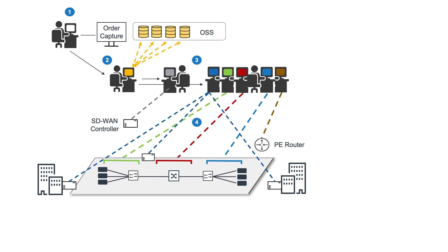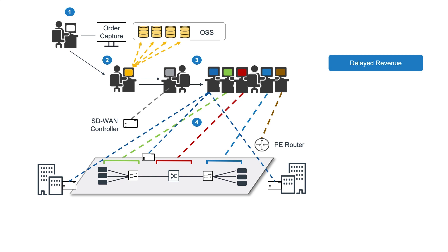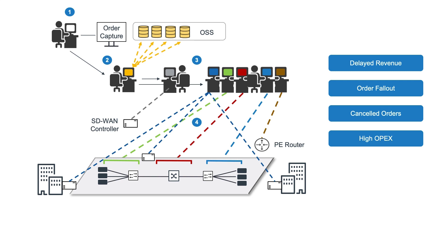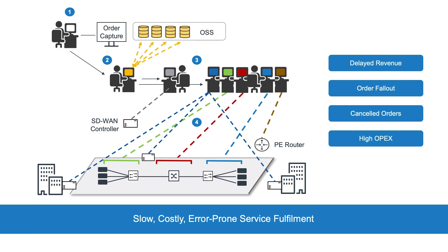The impact of this to a business can be as follows: slow service fulfilment, which delays revenues; manual errors leading to order fallout, missed commits, and cancelled orders; and high OPEX from all the manual efforts, which can lead to low margins or high and non-competitive prices meant to maintain margin goals. The challenge is to deal with slow, costly, and error-prone service fulfilment.